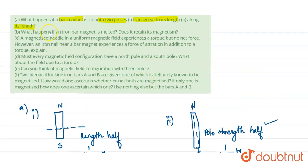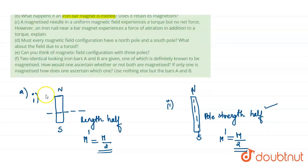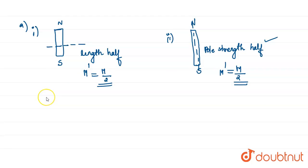What is the second question? It asks: what happens if an iron bar magnet is melted? Does it retain its magnetism? We can analyze what is given — it is asked what happens when we melt an iron bar. An iron bar is a material which can be magnetized.